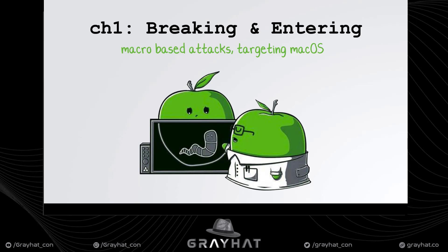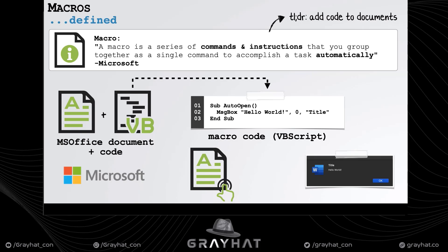First, what is a macro? A macro is embedded executable code in Microsoft Office documents — in other words, it allows one to add code to a document. I've added the official Microsoft definition on the slide.